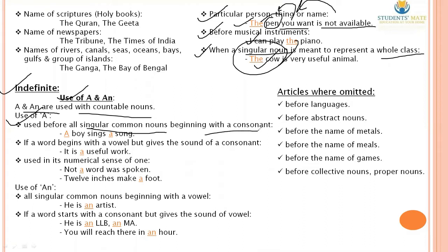For example: 'A boy sings a song.' Here, 'boy' and 'song' both begin with consonant sounds, so 'a' is used before them.